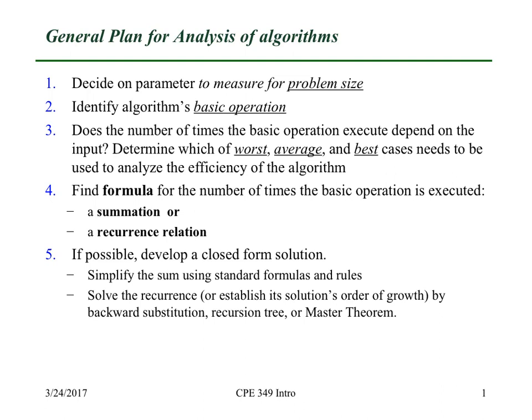Generally speaking, we're going to be interested in the worst case behavior because that's what people worry about in real applications. Then we need to find a formula. We're basically just counting and trying to come up with some relation that tells us the number of times to execute the basic operation. This formula gives us either usually a summation, if it's an iterative algorithm normally, or a recurrence relation.